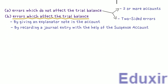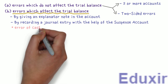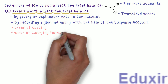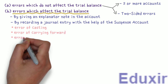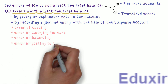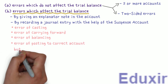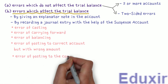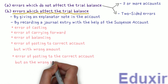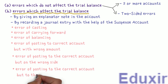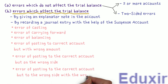Examples of these one-sided errors are: error of casting, error of carrying forward, error of balancing, error of posting to correct account but with wrong amount, error of posting to the correct account but on the wrong side, error of posting to the correct account but on the wrong side with the wrong amount, and omitting to show an account in the trial balance.